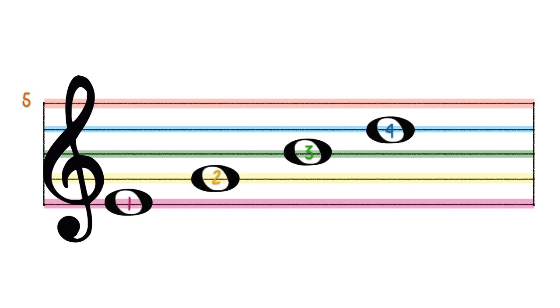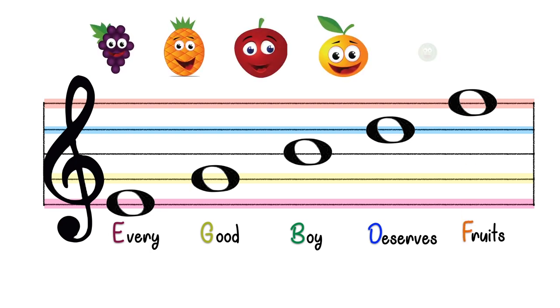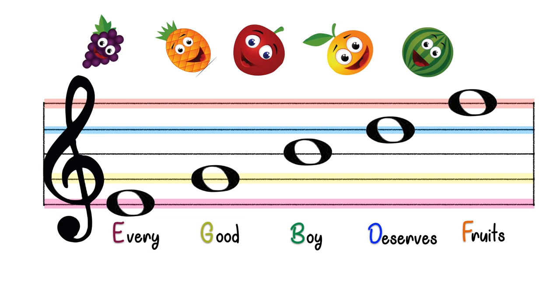On the treble clef stave, the acronym to remember line notes is Every Good Boy Deserves Fruits. The first letter of each word is the letter name of the note on the line. From the bottom to the top, you have E, G, B, D, F.